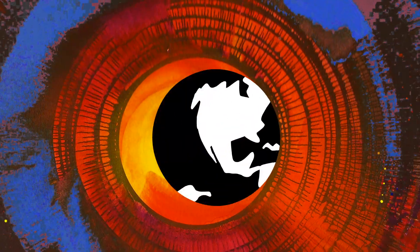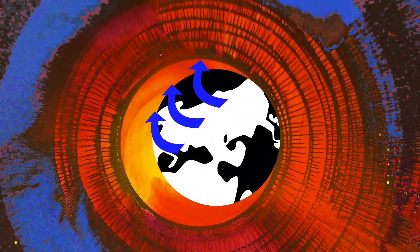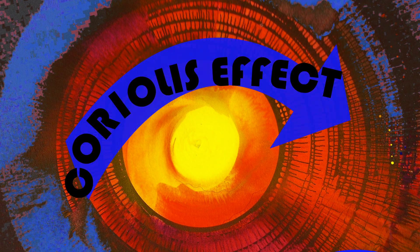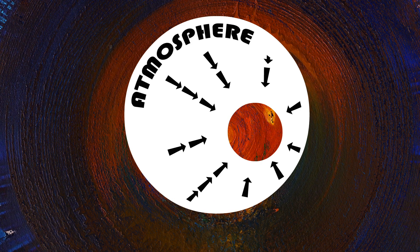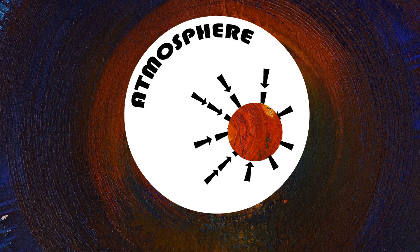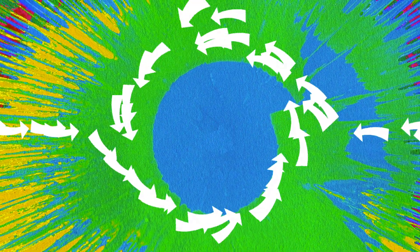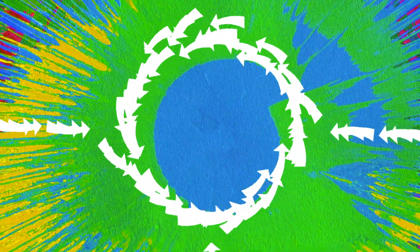But because the Earth spins, the moving air curves to the right in the northern hemisphere because of the Coriolis effect. If there's a region of low pressure in the atmosphere, air is pushed toward it like water going down a drain. But the air curves to the right as it goes, and this gives it a spin.